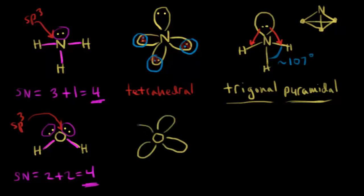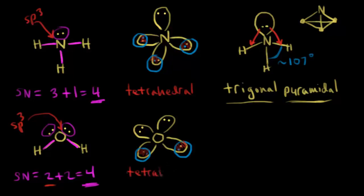We can draw oxygen with its four sp3 hybrid orbitals. In terms of electrons, one orbital gets one electron, another gets one electron, and the remaining two orbitals get two electrons each — accounting for oxygen's six valence electrons. We put in each hydrogen with one electron in an unhybridized s orbital, giving us two sigma bonds for water. The arrangement of these electron pairs is tetrahedral, so the electron group geometry is tetrahedral.